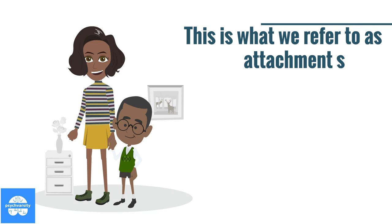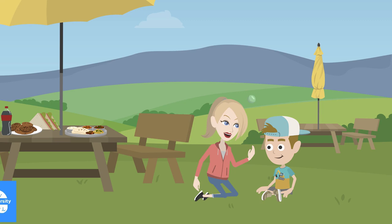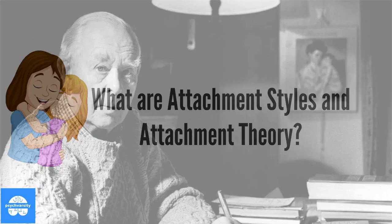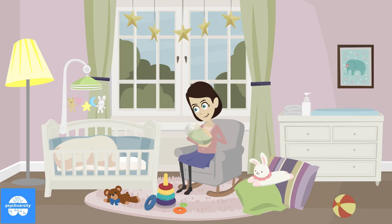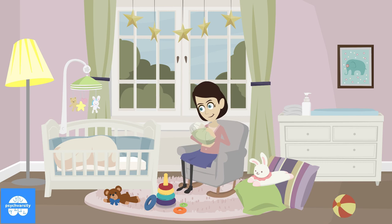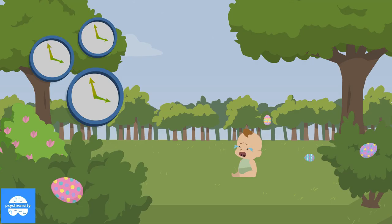Attachment styles are the emotional connections we form with other people, depending on how we create bonds as an infant, most often with our mothers. Attachment styles are based on John Bowlby's attachment theory. From birth, we are highly vulnerable beings, and if we were left unprotected in nature, we would die in a matter of hours.